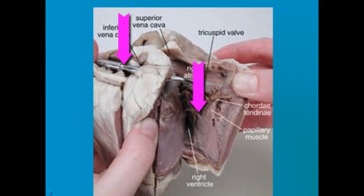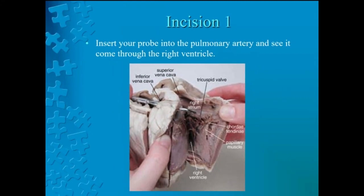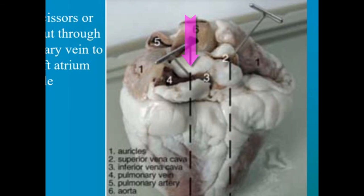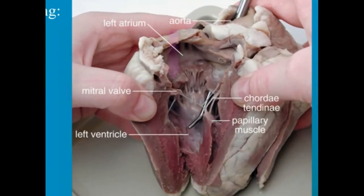You will make an incision through the pulmonary vein to open the left atrium and ventricle. We will pause to make the second incision. Locate the mitral valve, or the bicuspid valve, between the left atrium and ventricle. This will have two flaps of membrane connected to papillary muscles by the chordae tendineae, just like the tricuspid valve. The mitral valve is the other atrioventricular valve that prevents blood from flowing back into the atrium from the ventricle. You should also locate the chordae tendineae, papillary muscle, and the left ventricle. We will pause to locate these parts of the heart.